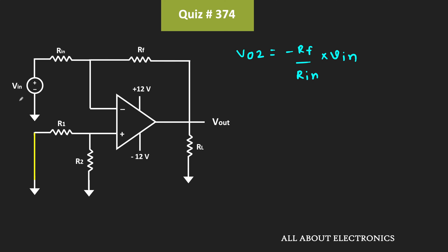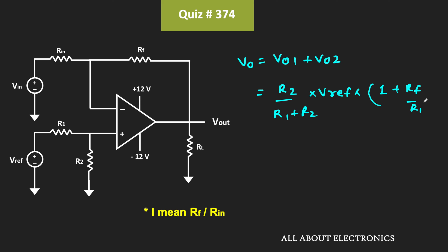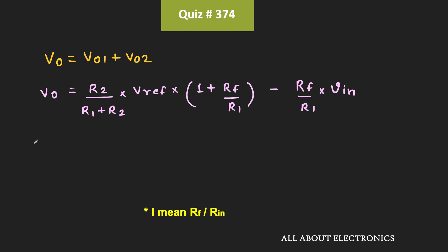The overall output voltage Vo equals Vo1 plus Vo2, which is (R2 divided by (R1 plus R2)) times Vreference times (1 plus Rf divided by Rin) minus (Rf divided by Rin) times Vin. In this way we found the relationship between the output voltage and the input voltage.